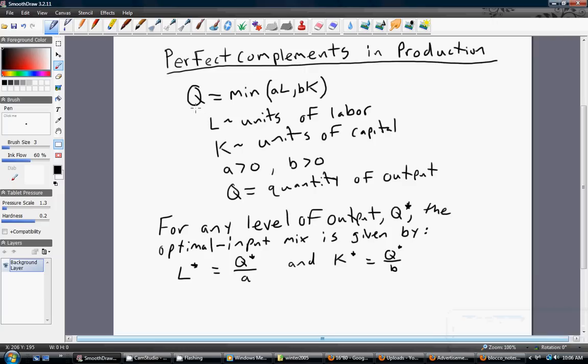Perfect complements in production is given by a production function of this general form. The firm's output Q, or quantity of output, equals the minimum of A times L or B times K. So for this firm, the production function tells us that output will be the minimum of A times L or B times K.